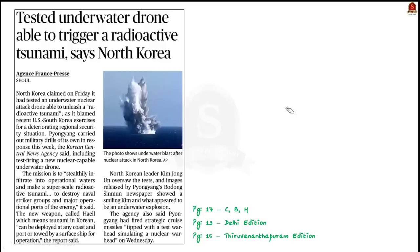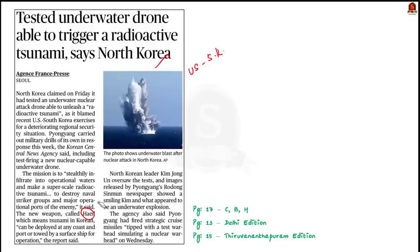Earlier this month, the US and South Korea launched their largest military exercise in nearly six years, which triggered North Korea. As the news article says, North Korea has tested an underwater nuclear attack drone by the name Haeil. North Korea stated that this underwater nuclear attack drone can infiltrate into operational waters and create a super-scale radioactive tsunami. In our discussion today, we will see some facts about the underwater nuclear drone Haeil.